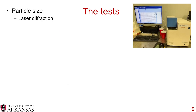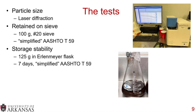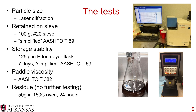For test details: particle size used a laser diffraction particle size analyzer. For the sieve, we used a simplified AASHTO T59 — pouring 100 grams through a number 20 sieve. For storage stability, another simplified AASHTO T59 spec for seven days, but using 125 grams in an Erlenmeyer flask instead of 500 mL graduate cylinders. We used AASHTO T382 for paddle viscosity. For residue, we placed 50 grams in a 150°C oven for 24 hours, as there are many methods that impact the residue obtained.